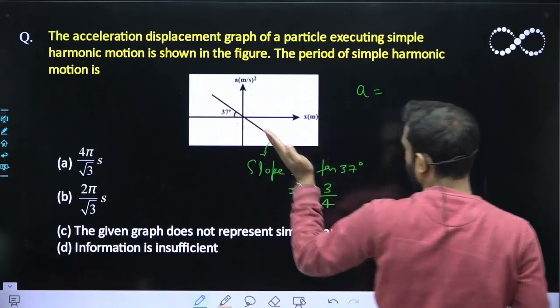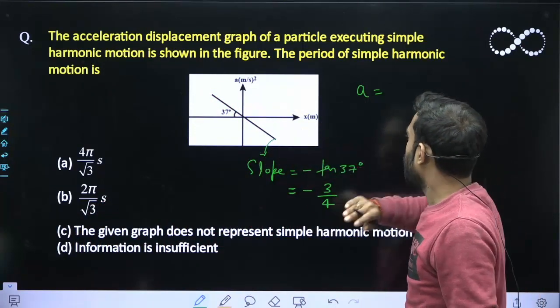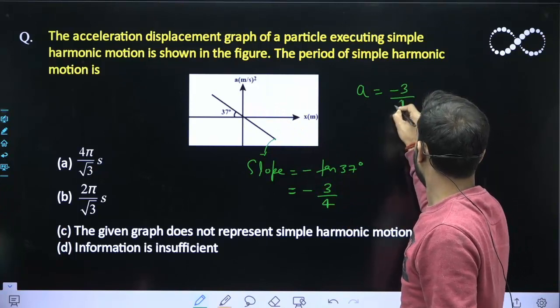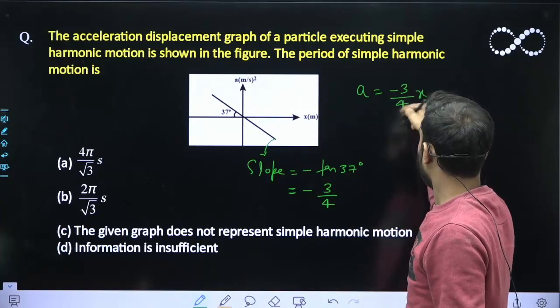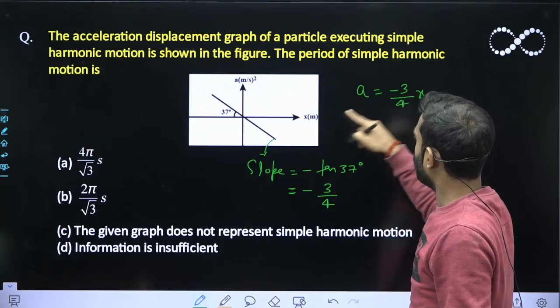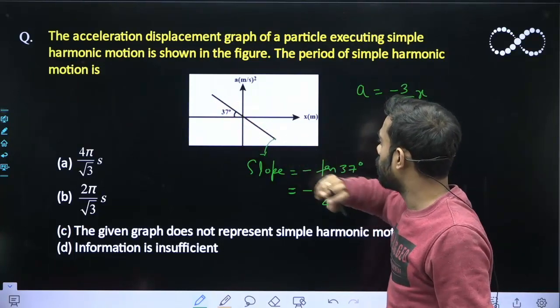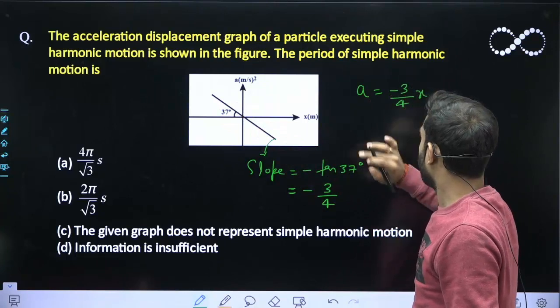So, I can write the equation of this line that is a is equal to minus 3 by 4 into x. So, y is equal to mx plus c. Since it is passing through the origin, the c intercept will be 0. And the slope is minus 3 by 4. So, this is the graph.